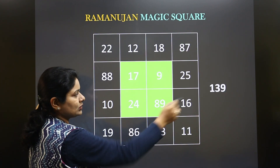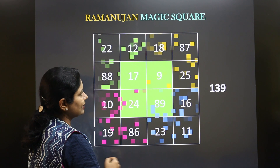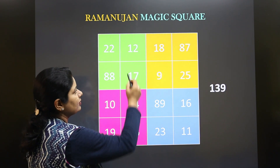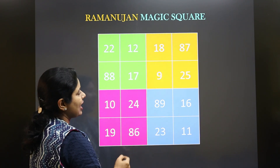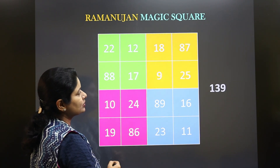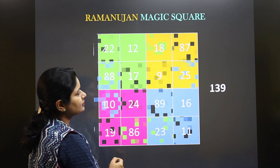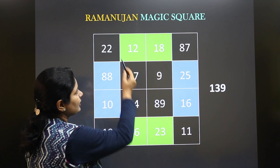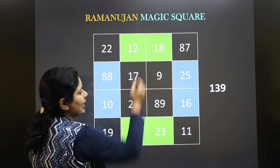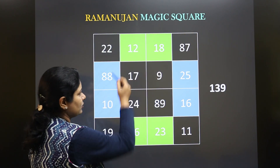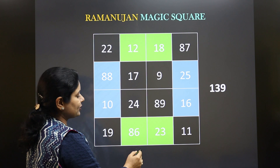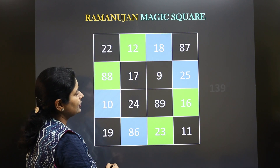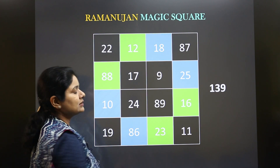Or even these. Let me show you some more patterns. If you add these four or these four, they also add to 139 — even these.